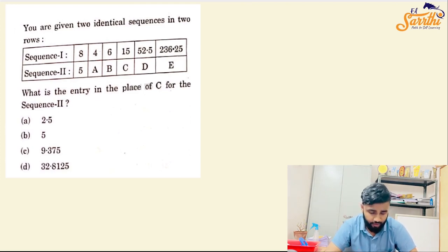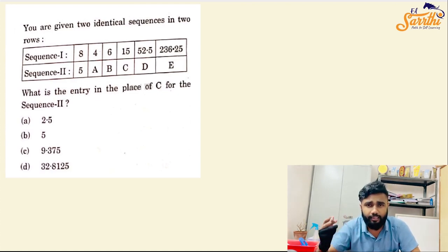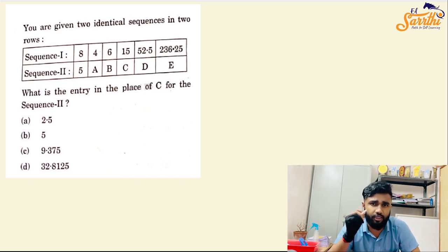The sequence is 8, 4, 6, 15, 52.5, 236.25. Now, what is the graph? And I will tell you how the numbers flow. The most important thing in the number series question is that you have to get the flow. So, the numbers of which order are increasing or decreasing? What is the graph? What is the movement?